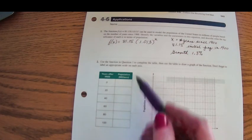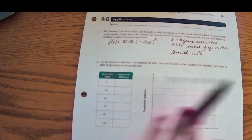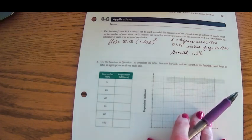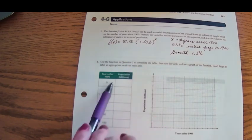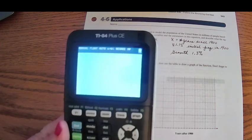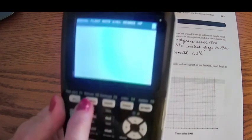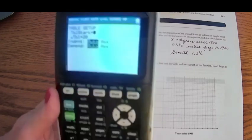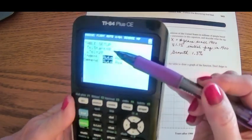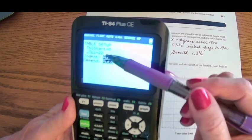So question number 2 says to fill in this table, and once we have this table, go ahead and make a graph using the data values. They want to know the population based on the model at 0, 20, 40, 60, 80, or 100 years since the year 1900. So once again, we're going to use our calculator to do this. Let's go ahead and change our table settings. So we're going to start at 0, and delta table means every row will go up by 20.